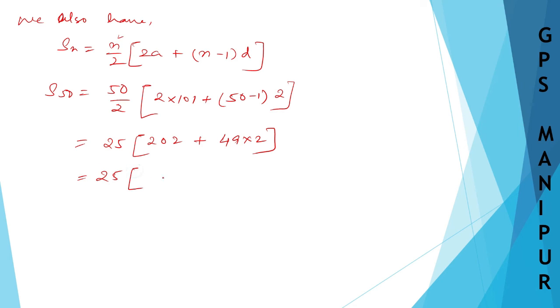2 into 101 is 202 plus 50 minus 1 is 49 into 2, which is 98. So 25 into 202 plus 98 is 300. 25 into 3 is 75 and double 0. So this is the answer.